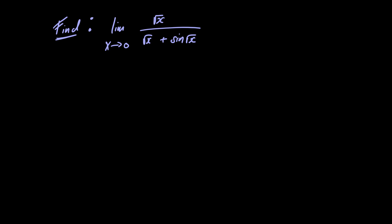If we let x go to 0, in the numerator we have 0, and in the denominator we have 0 plus sin(0), which is also 0. So we have a limit of the form 0/0, and to evaluate it we're going to use L'Hôpital's rule.